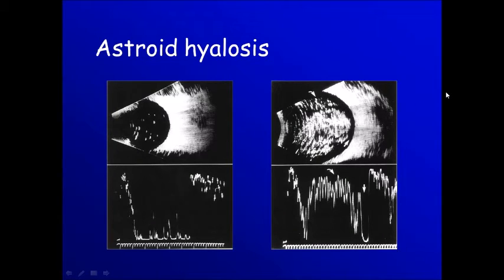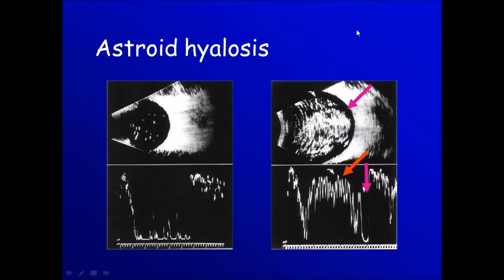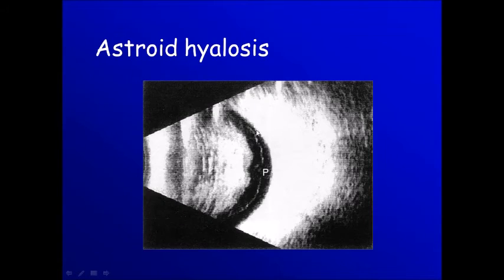The last thing is asteroid hyalosis, where we have calcium deposited in the vitreous cavity. As you notice here, the reflectability is high. A second character is that the most peripheral part of the vitreous is free of these calcium dots. So here we have a posterior vitreous detachment — this is the peripheral part of the vitreous and it is of low reflectability compared to the area where we have the calcium.